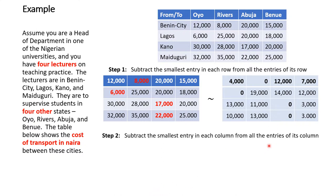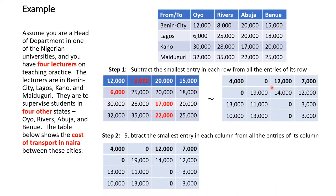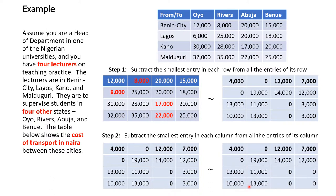The second step is to subtract the smallest entry in each column from all entries of that column. Looking at each column: the first column's smallest is zero, the second column's smallest is zero, the third column's smallest is zero, and the fourth column's smallest is 3,000. Subtracting column by column gives the updated matrix.